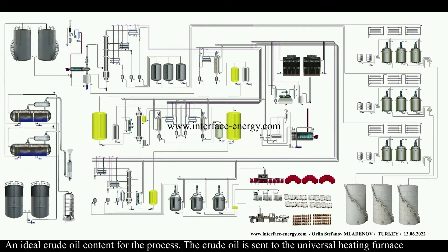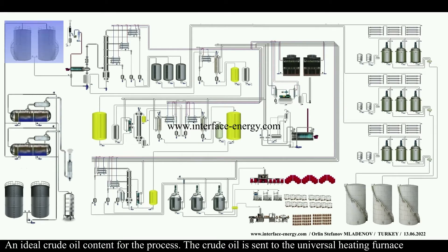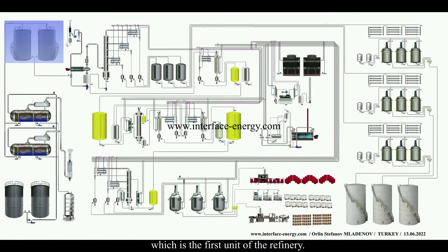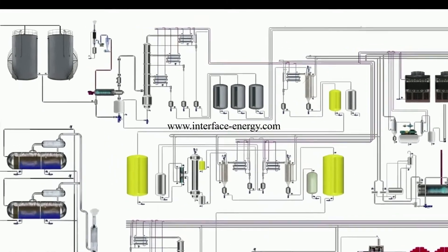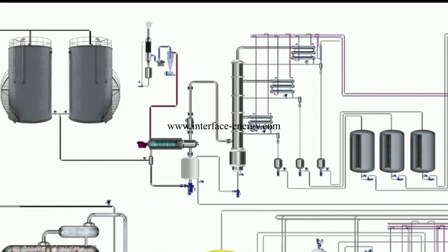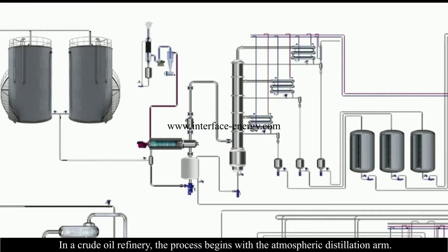The crude oil stored in the refinery storage tanks is now ready for processing. It is sent to the universal heating furnace, which is the first unit of the refinery, where the atmospheric distillation process begins.